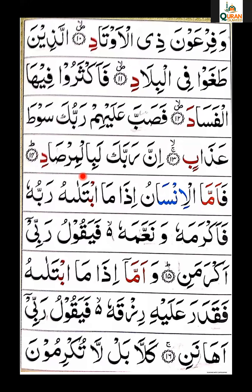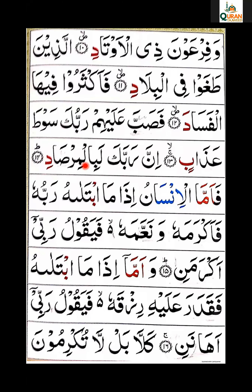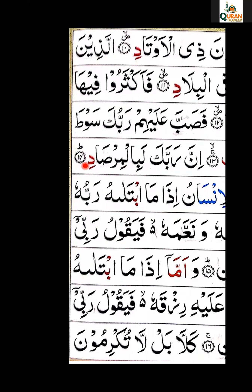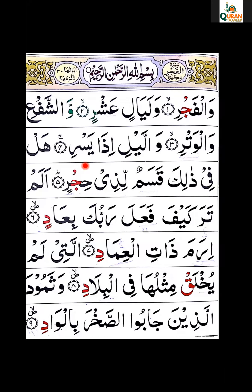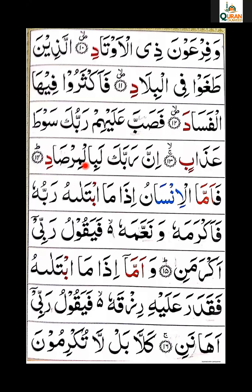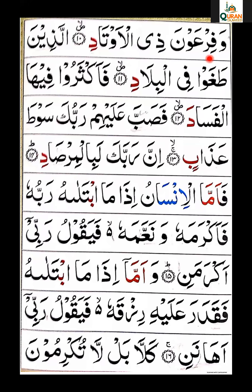آیت نمبر 14 تک آج ہم انشاءاللہ کمپلیٹ کریں گے۔ آیت نمبر 10 سے دیکھئے: وَفِرْعَوْنَ ذِي الْأَوْتَادِ۔ واؤ زبر، واؤ فا کو ہم را کے ساتھ ملائیں گے۔ یہاں پر را ساکن ہے اور اس سے پہلے فا پر زیر ہے، اس وجہ سے را ساکن جو ہے باریک پڑھی جائے گی۔ وَفِرْ، وَفِرْعَوْنَ۔